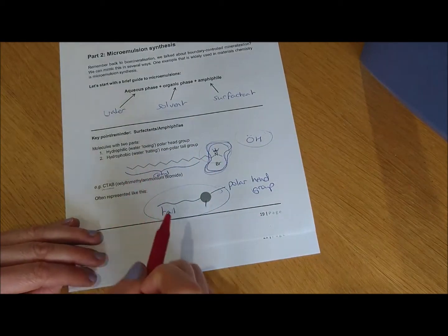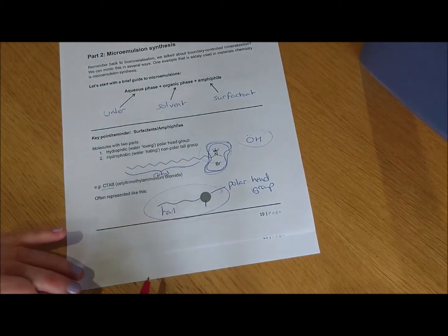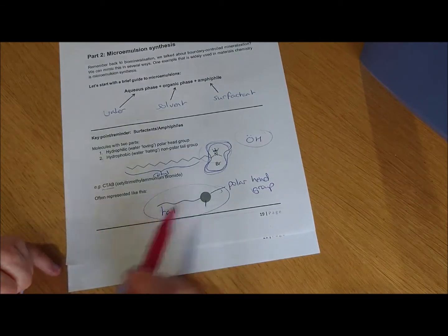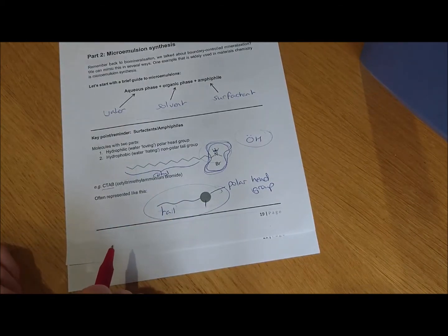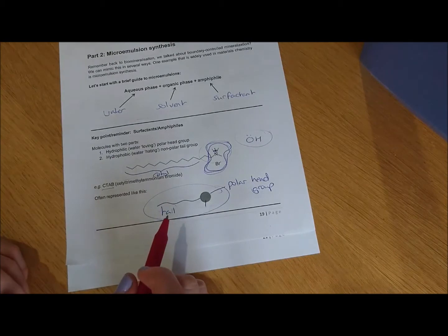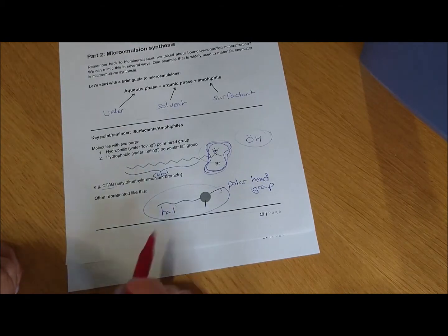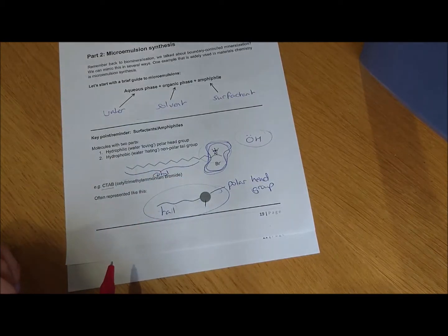CTAB is just one example. There's loads of different types of surfactant molecules out there, and lots that are used in microemulsions. CTAB is actually used quite commonly in microemulsions. It's a really widely used surfactant.